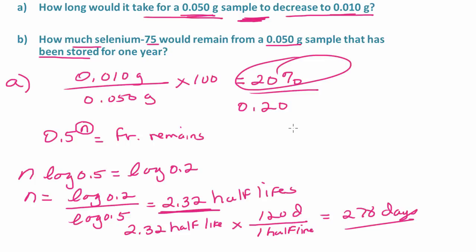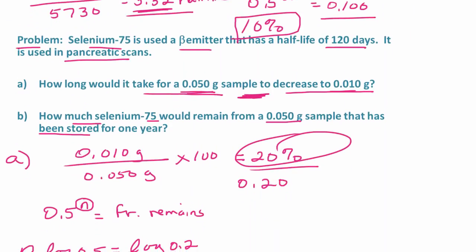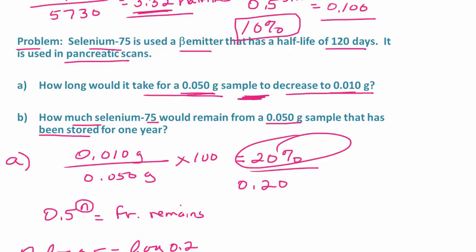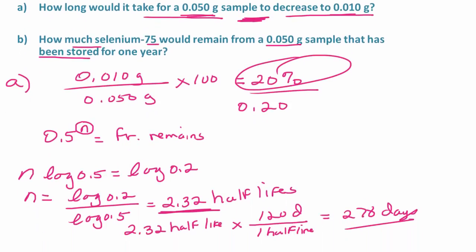Again, that's only 20%, so it would take a long time for this particular radioisotope to decay to almost 0. Remember, from this graph here, or from the plot I showed you before, it never quite reaches 0. So, now we have to do part B.